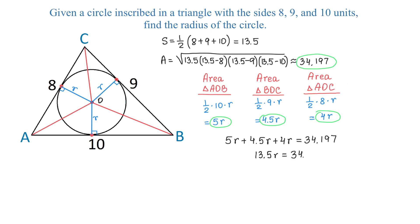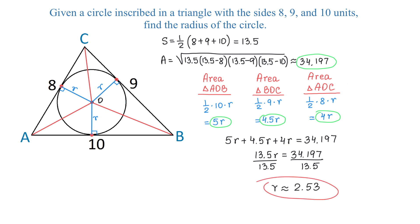On the left side we have 13.5R, and on the right side 34.197. Dividing both sides by 13.5, R will be approximately 2.53 units. The problem is now completed. Thank you for watching.